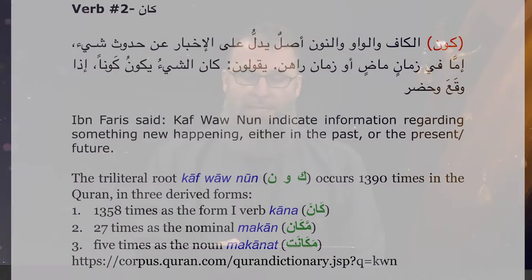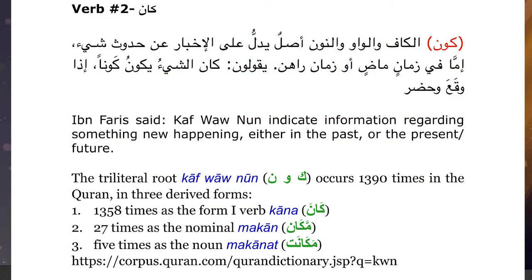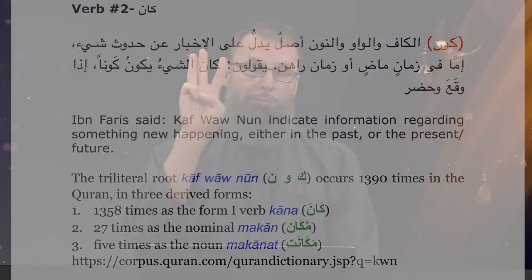When we look at the simple singular masculine past tense, the verb form is 'kaana.' In Corpus Quran, it mentions that these three root letters occur 1,390 times in three different forms. Mashallah — basically almost 1,400 times in the Quran, so long as you pay attention to those three root letters.